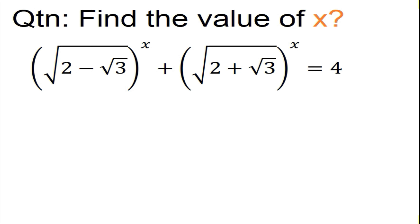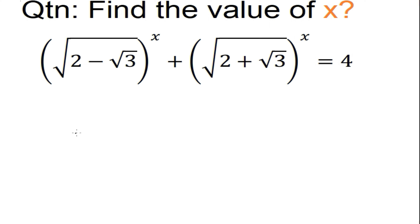The question says: find the value of X where (√(2 − √3))^x + (√(2 + √3))^x = 4. We need to find the value of X.